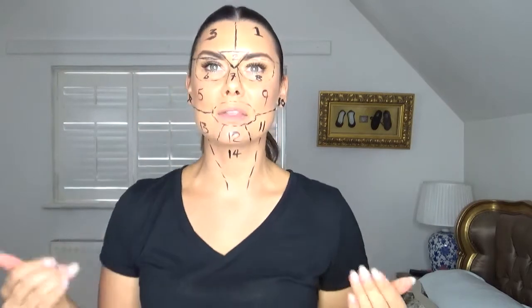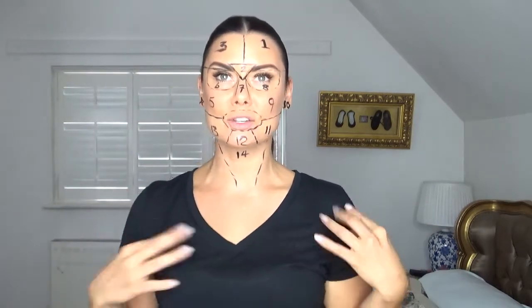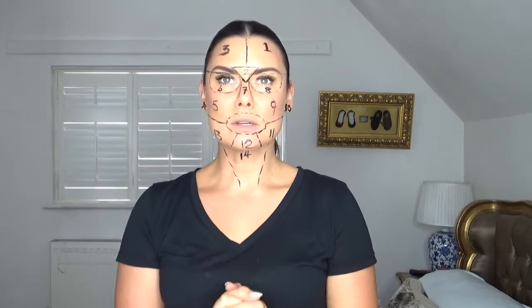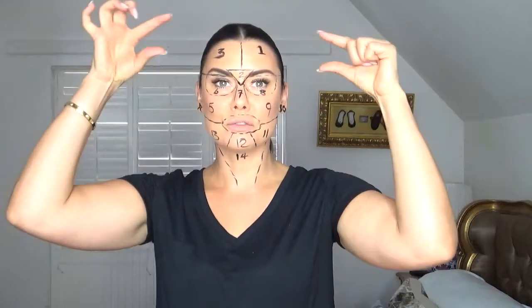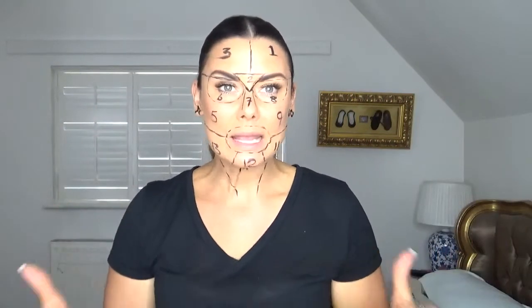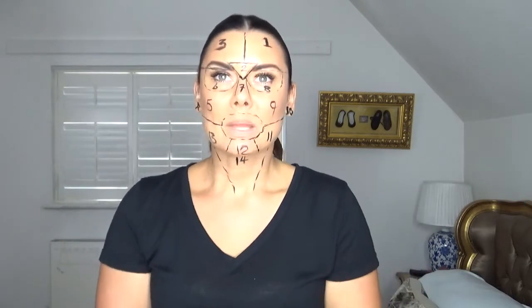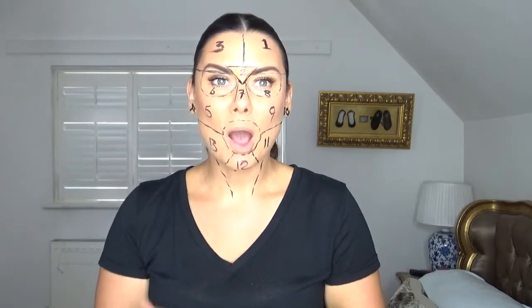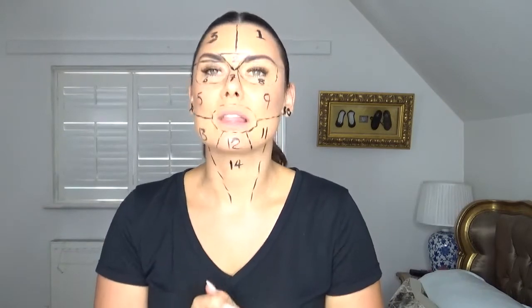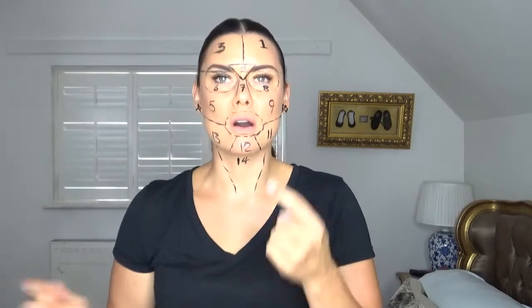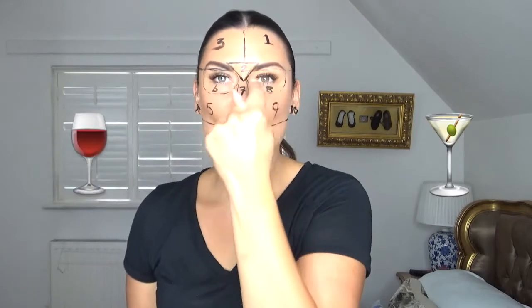I've mapped it out — there are 14 sections of the face. I'll start with zones one and three: that's your forehead, which corresponds to your digestive system. If you're having outbreaks up there, it's because you're eating something you might be allergic to or you're not drinking enough water, so start by upping your intake of water.